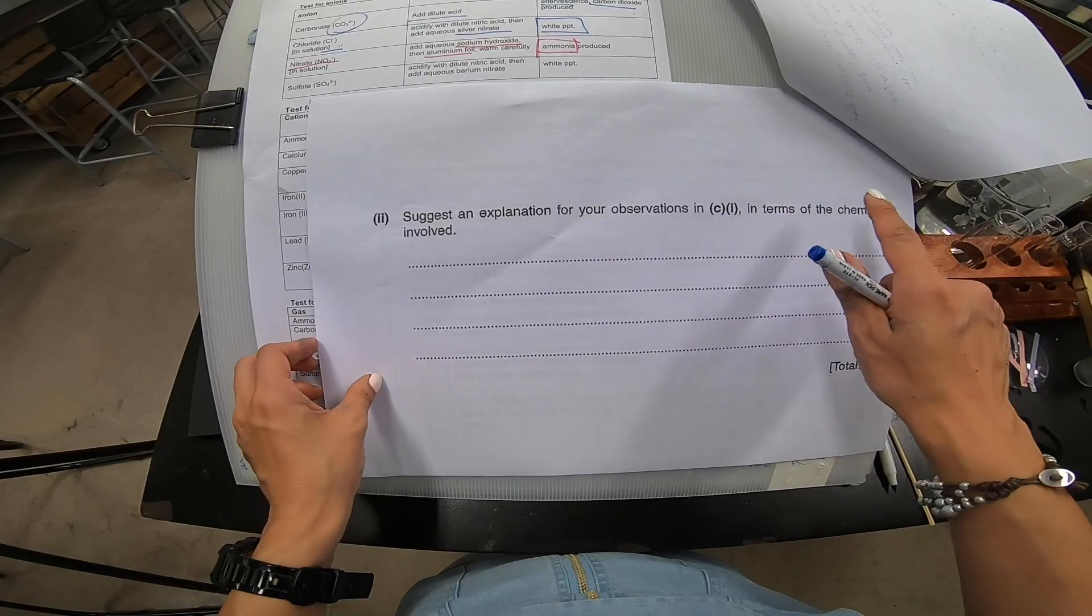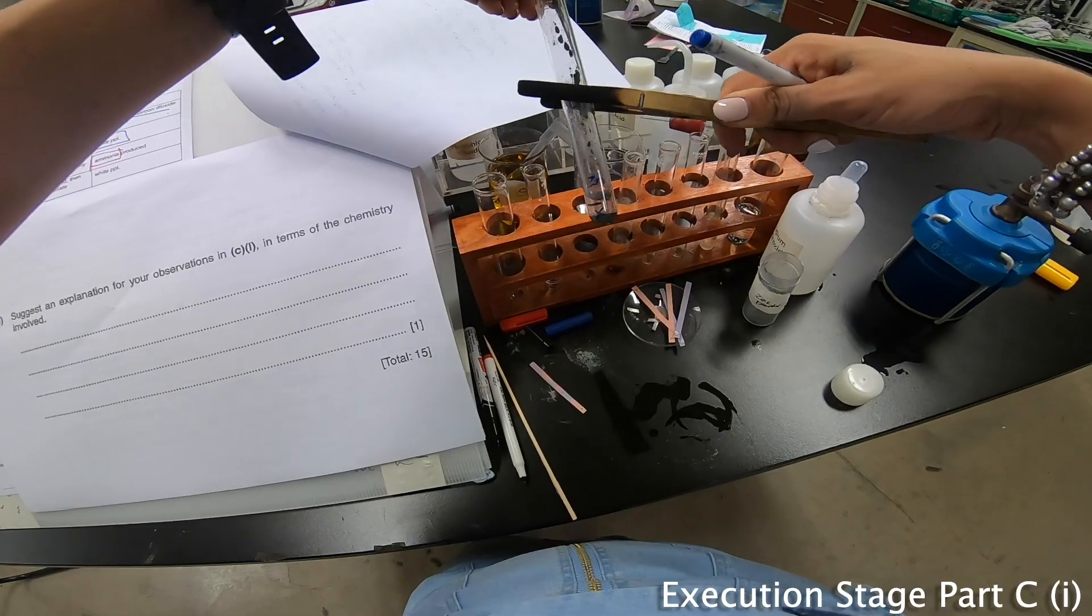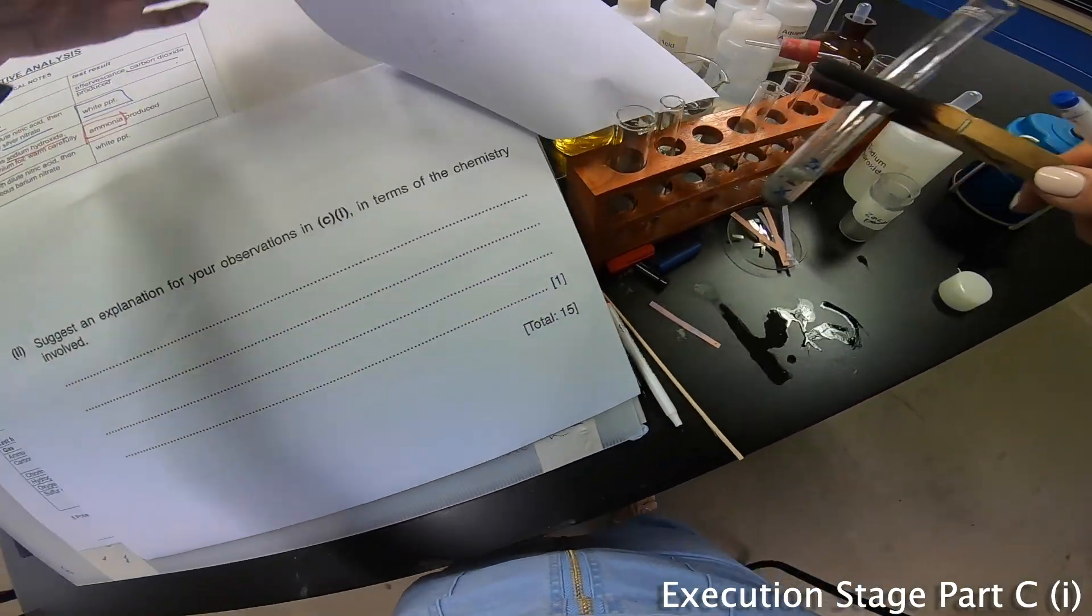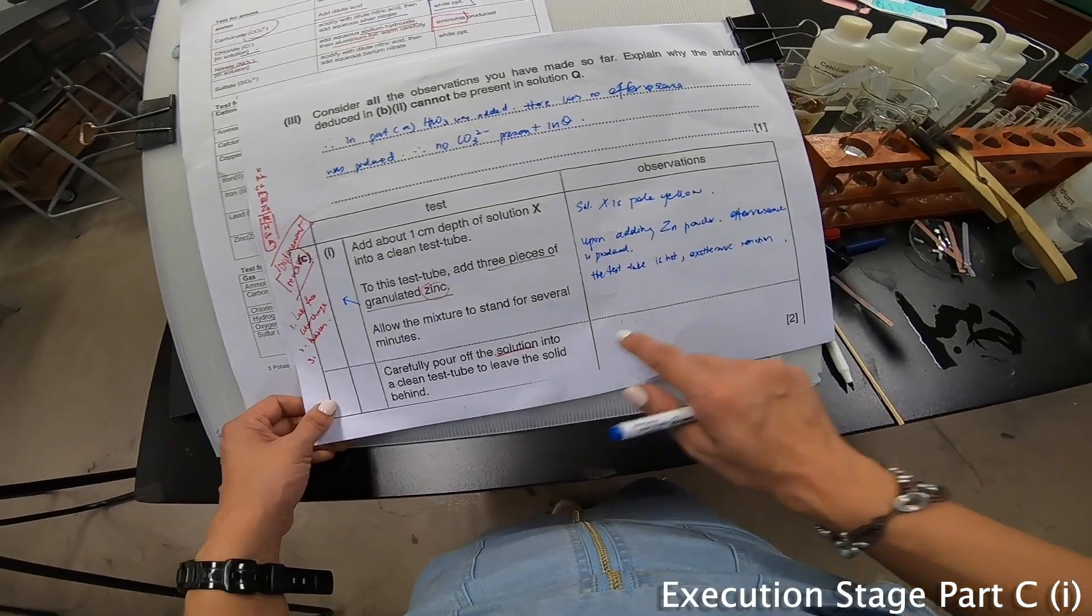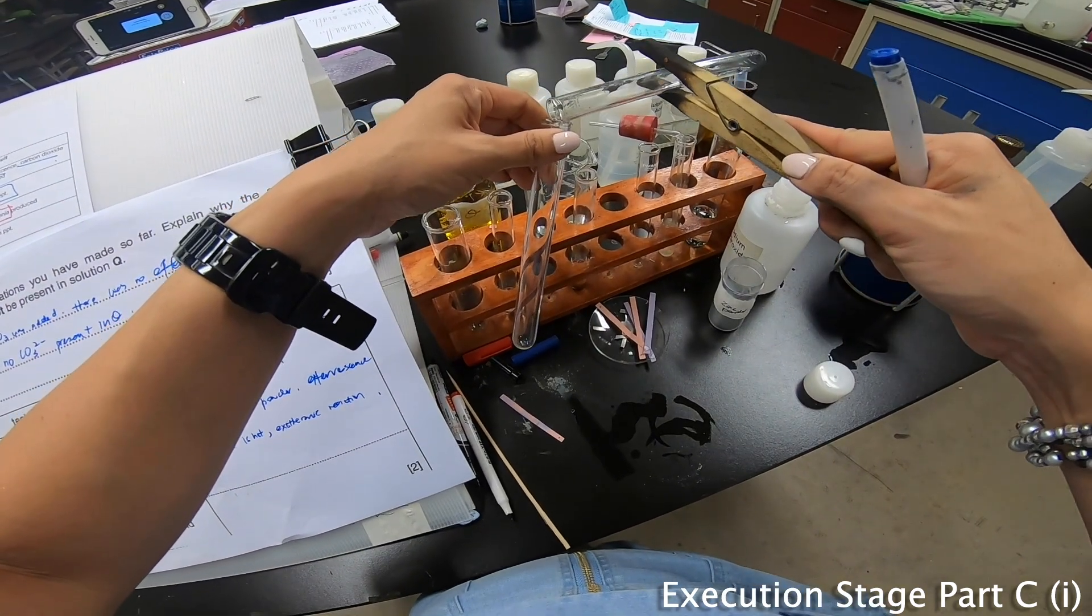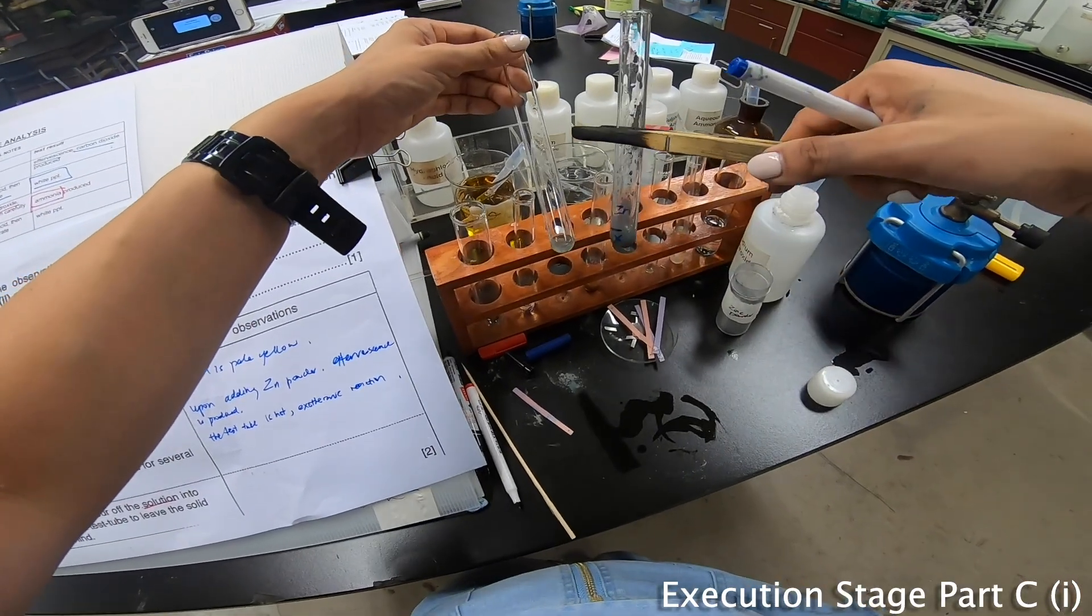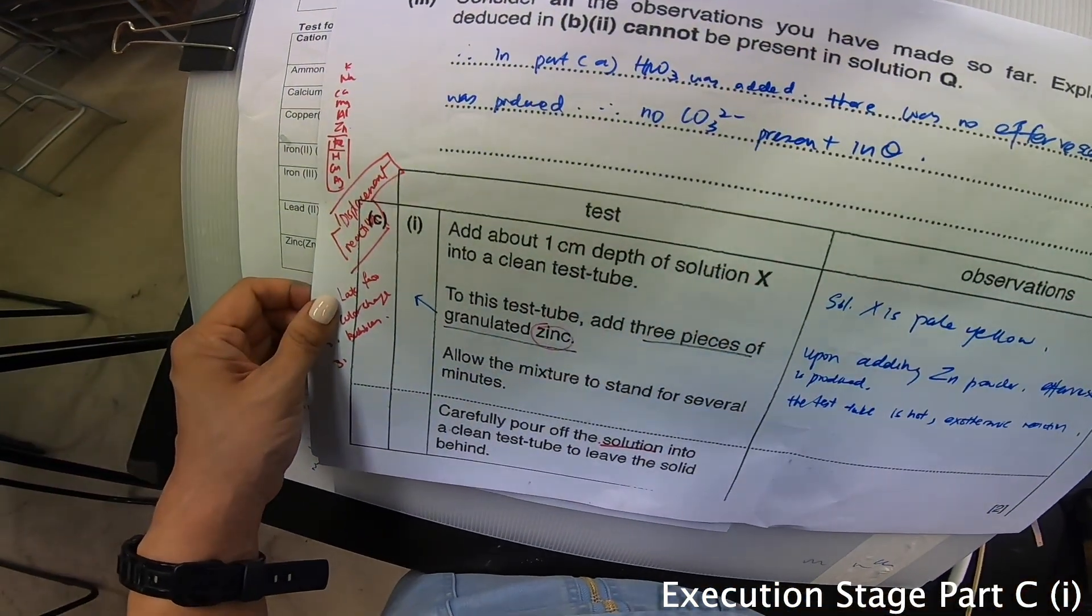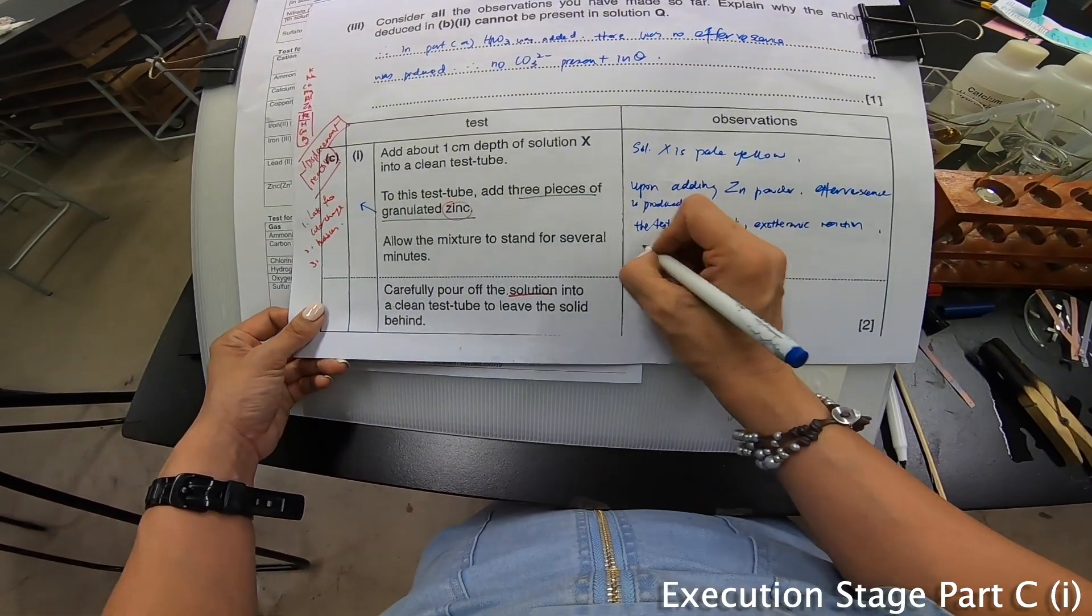Suggest an explanation for your observation in C part 1 in terms of the chemistry involved. Let's take a good look at our C part 1. You can see there is a color change. Carefully pour off the solution into a clean test tube and leave the solid behind. This is the clear solution, this is a solid. I'm going to write down what I actually observed in this part. Solution X became a clear solution. Zinc was left.